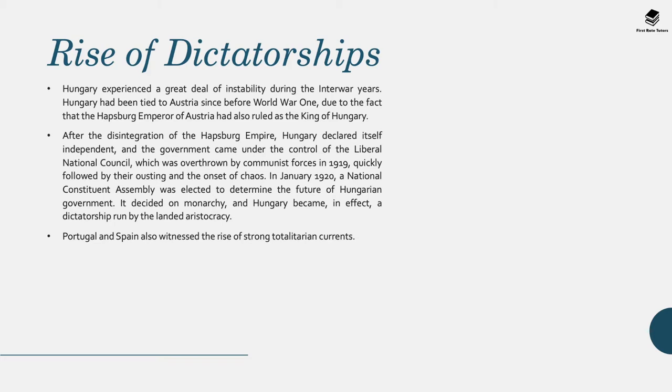Hungary also experienced great instability during the interwar years. Hungary had been tied to Austria since before World War One as part of the Austro-Hungarian Empire under the Habsburg Emperor. After the disintegration of the Habsburg Empire, Hungary declared itself independent and the government came under the control of the Liberal National Council, which was overthrown by communist forces in 1919, quickly followed by their ousting and the onset of chaos. In January 1920, a national constituent assembly was elected; it decided on monarchy, and Hungary became in effect a dictatorship run by the landed aristocracy.